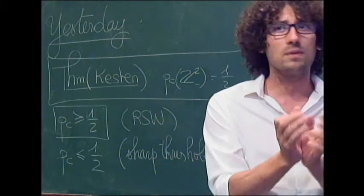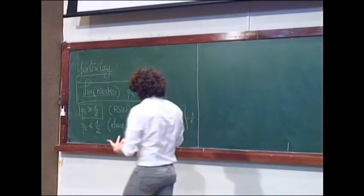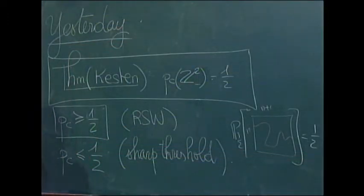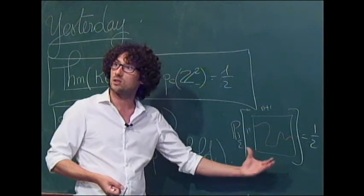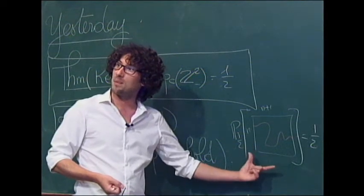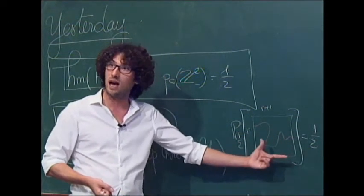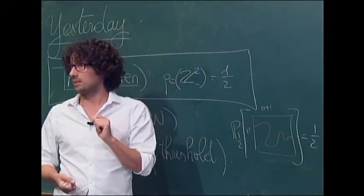Modulo RSW, it was telling us that pc is larger or equal to 1/2. And think of it as the easy bound. So then there was the other bound, which was trying to prove that pc is smaller or equal to 1/2 — so prove that above 1/2, you necessarily have an infinite connected component. And that was a little bit trickier. So what we did is that we proved a sharp threshold for these quantities.